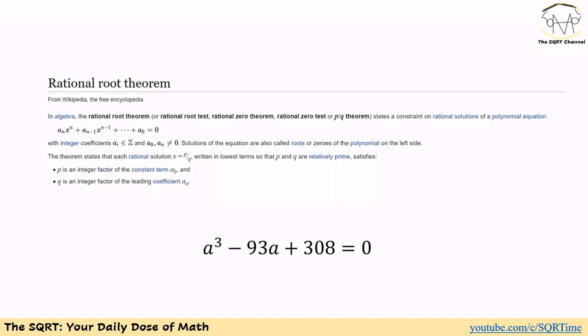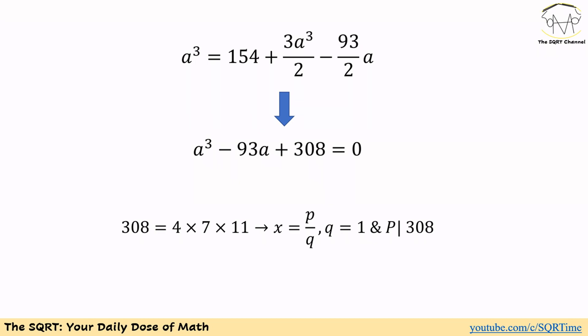First of all, note that all coefficients that we have here are integer coefficients. Second, we are going to find roots in the form of p over q where p and q are relatively prime and q is an integer factor of the leading coefficient a_n. Here a_n equals 1, so q is going to be 1. Here p needs to be an integer factor of the constant term that we have. The constant term that we have here is 308, so we are looking to find an integer factor of this 308. As you can see, 308 can be written as 4 times 7 times 11. We have x is going to be in the form of p over q, q equals 1 and p is going to be a divisor for 308.